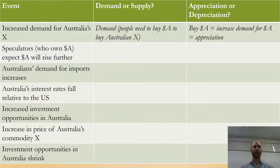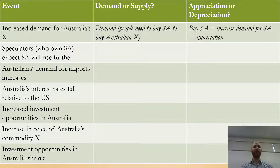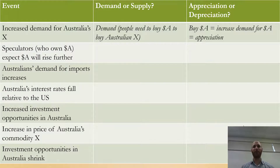Let's try some examples. I will take you through the first example, then pause the video, complete the rest of them, and we will go through them in the next video. The first event: there is increased demand for Australia's exports. If there is increased demand for Australia's exports, then people will want to buy more Australian exports. To buy Australian exports, people will need Australian dollars. So, if there is increased demand for Australian dollars, that will lead to a currency appreciation.